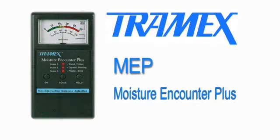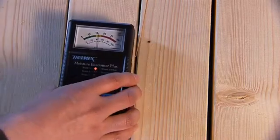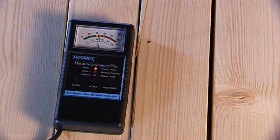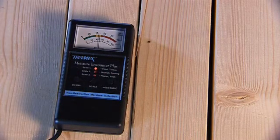The Tramex Moisture Encounter Plus, or MEP, is a hand-held, non-destructive instrument designed to detect and measure moisture in a wide variety of building materials.